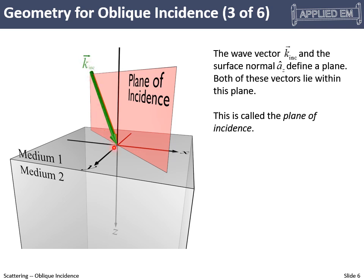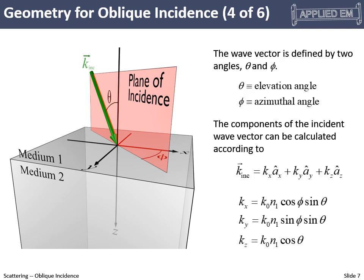When we have an incoming wave and a surface normal, these two vectors define a plane called the plane of incidence. Everything that happens — the reflected and transmitted waves — lies in this plane. Since the media are of infinite extent, we're free to rotate that plane for calculating reflection and transmission, though not for polarization calculations. The elevation angle theta is the angle of incidence off the surface normal, and phi is the azimuthal angle off the x-axis.